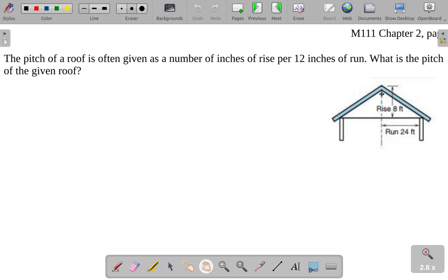So, if this roof has 8 feet of rise per 24 feet of run, let's look at this. 8 feet per 24 feet. When we say per, this is just yet another way of saying divided by. That's what per means, it's the division.